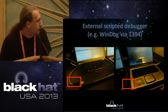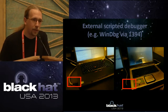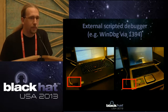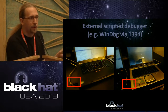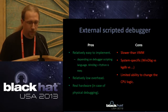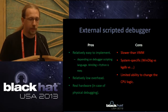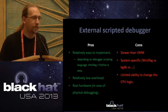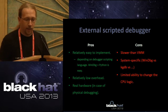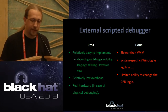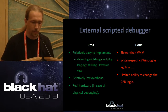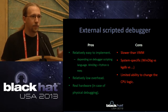Another approach: two laptops connected with a FireWire cable running Windows and WinDBG. You use an external debugger to instrument the running operating system. This is a pretty sweet approach — it's relatively easy to implement, especially if the debugger supports a scripting language like Python for WinDBG, has relatively low overhead compared to Bochs, and can run on real hardware. However, it's still slower than a hypervisor, it's system-specific, and you cannot change the logic of the CPU.